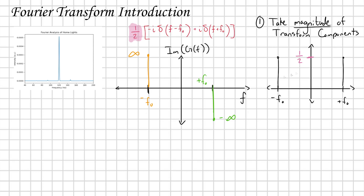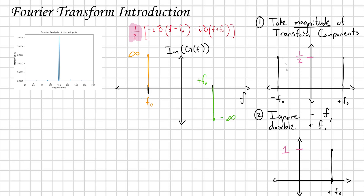So we can imagine doing the following procedure. Step one: take the magnitude of my transform components. Each of the delta functions has a cofactor of one half — let's just plot the one half, and because we're taking the magnitude, we ignore the minus sign. Next, let's ignore the minus frequency components — stick to the positive world. But I can't just delete that energy; I have to put it back in, so I'm going to double the positive side. And there we go — now we have a plot of what is called the amplitude spectrum.